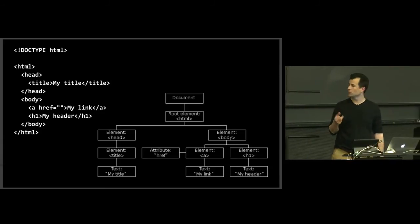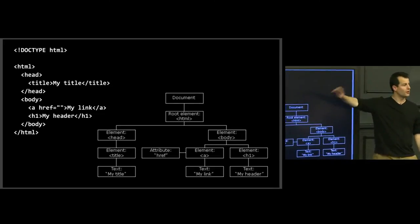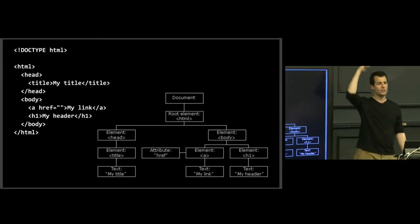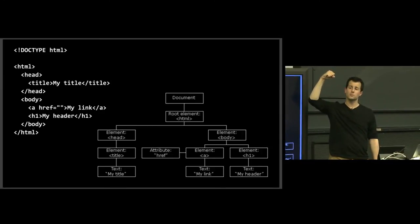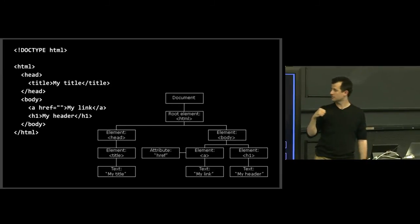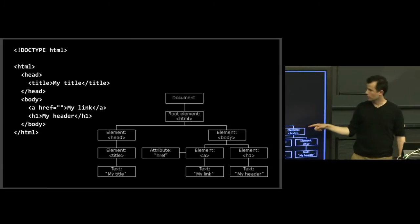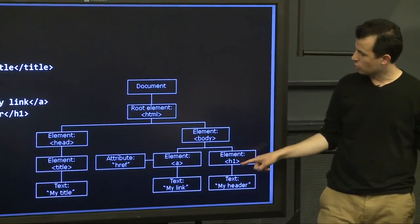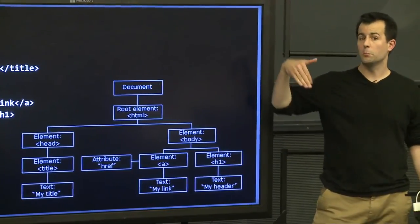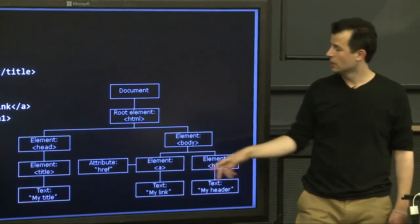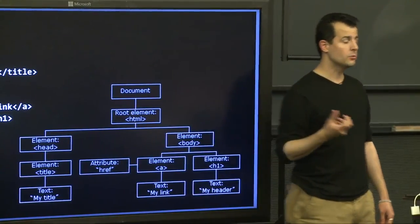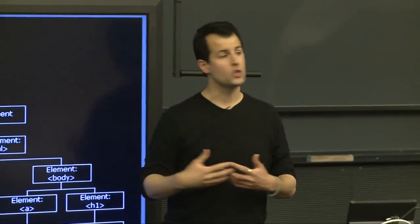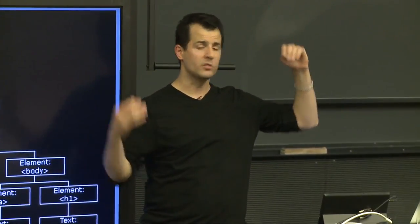There's an uber node — the document node — and for those familiar with JavaScript, you might have seen the document global variable. Here's our root element, HTML, which has two children: head and body. Head has a title tag with a textual child. Body has an anchor tag and an h1 tag, each with a textual child. Because an attribute like href doesn't belong below the node as a child, we draw it laterally off to the side — it's an attribute of the node, not a child. If you start thinking about HTML as ultimately constituting a tree once parsed, that mental model becomes very powerful.